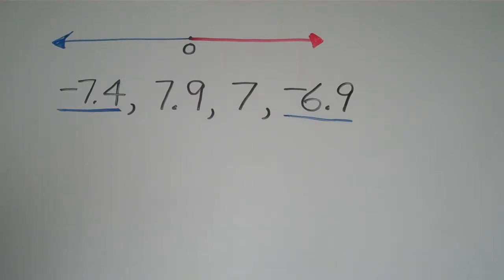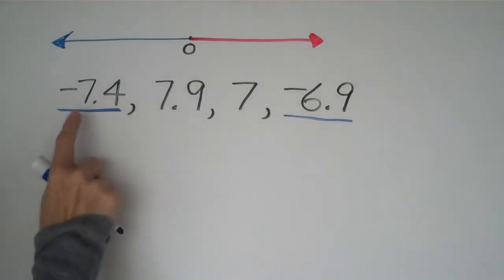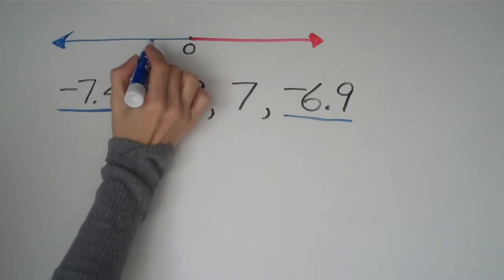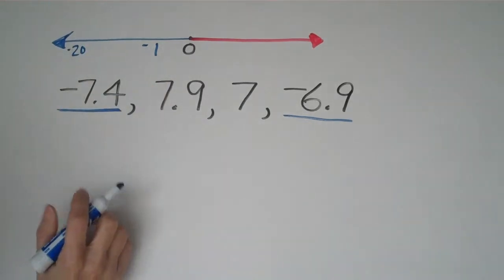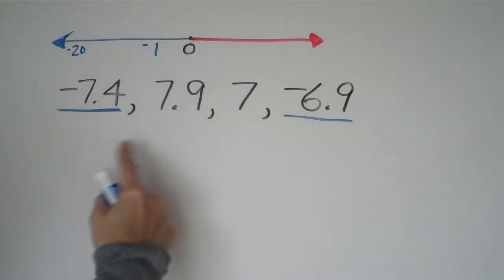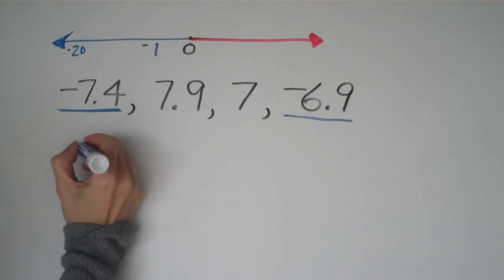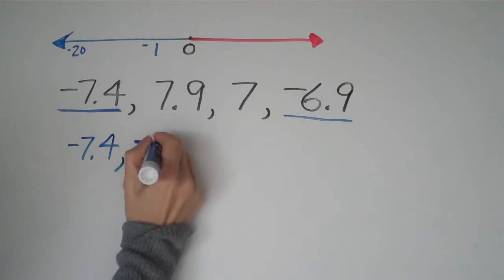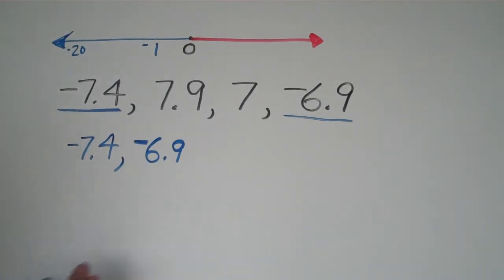With negatives, the number that looks the biggest is actually the smallest. Think of a number line: negative 20 would be way further left than negative 1, so it's smaller. Same thing for decimals — negative 7.4 is actually smaller than negative 6.9. So we list negative 7.4 first, then negative 6.9.